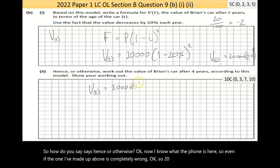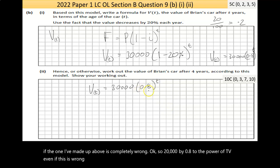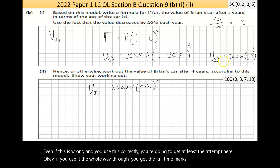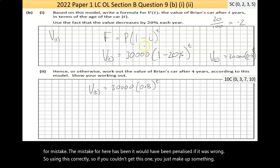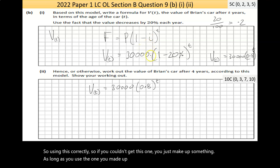Even if the formula I've made up above is completely wrong, 30,000 by 0.8 to the power of T, even if this is wrong and you use this correctly, you're going to get at least the attempt here. If you use it the whole way through, you'll get the full 10 marks. You can't be penalized for a mistake.